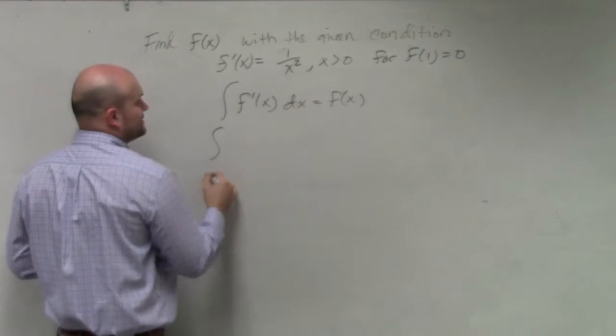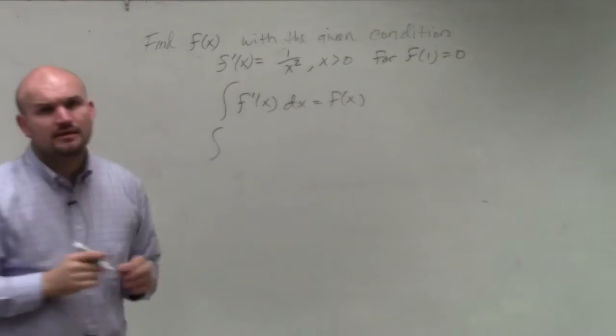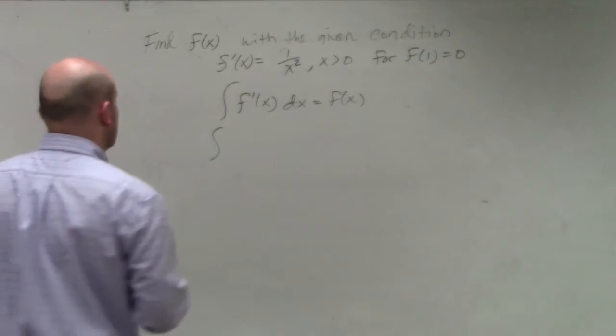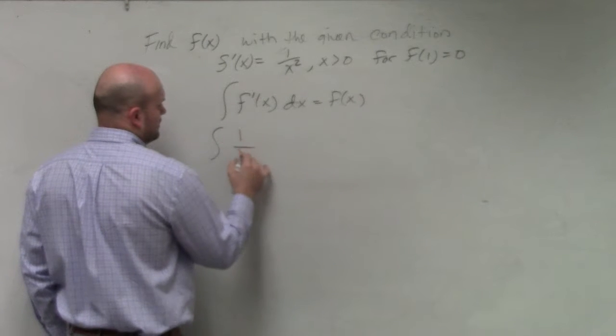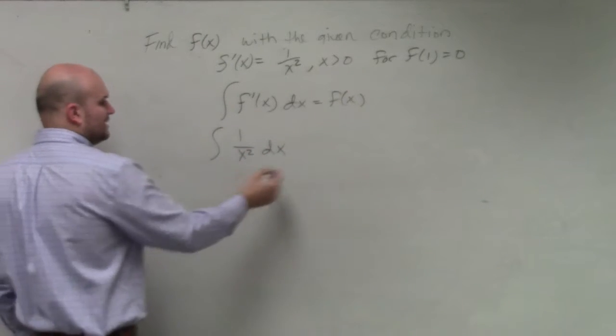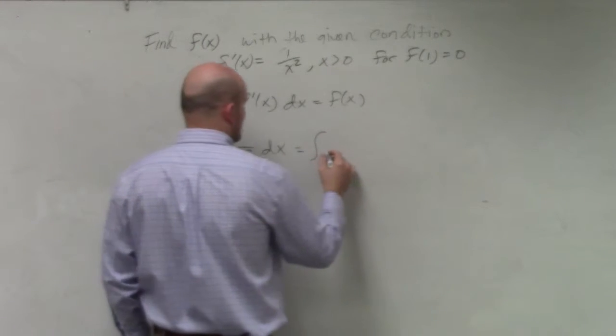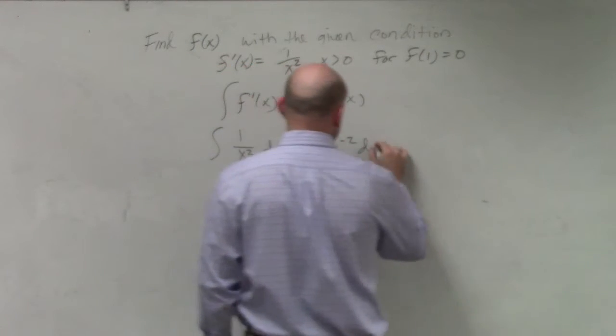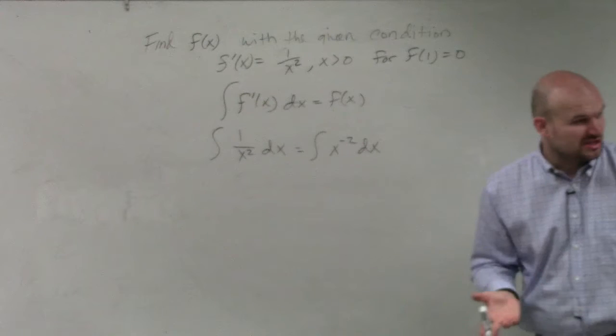So we need to integrate 1 over x squared dx. Well, we can rewrite that as the integral of x to the negative second dx. That makes it much easier to integrate.